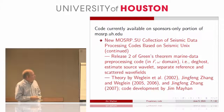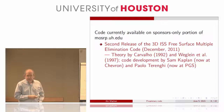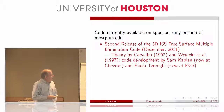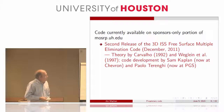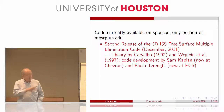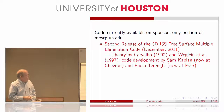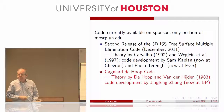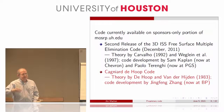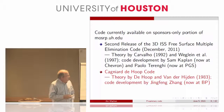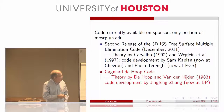Continuing down the list, the next item is the second release of the pre-service multiple elimination code, with theory by Cavaglio and Wegwein et al., and code development again by Sam. Paolo made some changes, which is why this is the second release. The next item is the Kenyar Dehout code — one way of generating synthetic data. When Jing Fang Zhang was here, he wrote this code to test his de-ghosting code, based on theory by Dehout and Vanderheyen, which is included in the documentation.